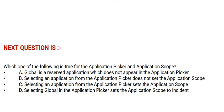Next question: Which one of the following is true for the application picker and application scope? Option A: global is a reserved application which does not appear in the application picker. Option B: selecting an application from the application picker does not set the application scope. Option C and Option D: selecting global in the application picker sets the application scope to incident. The correct answer is Option C.